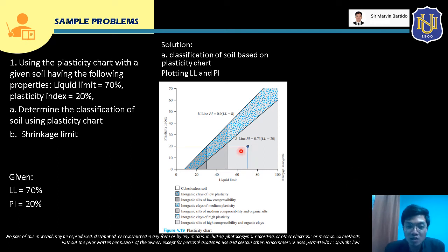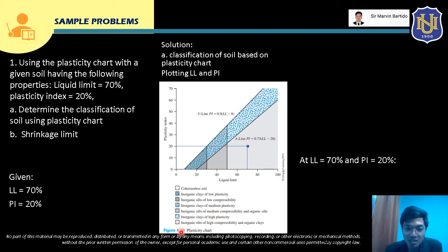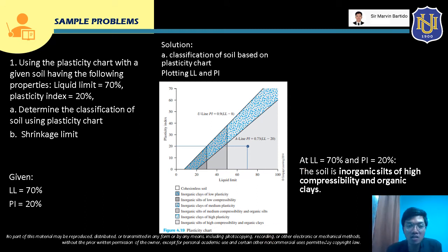The point at LL = 70 and PI = 20 falls in this region, which is inorganic silt of high compressibility and organic clay. That is the classification of this soil using the plasticity chart.